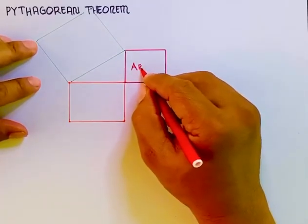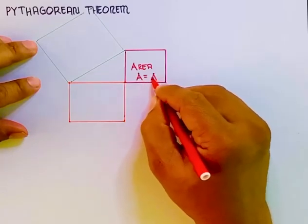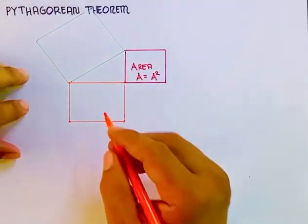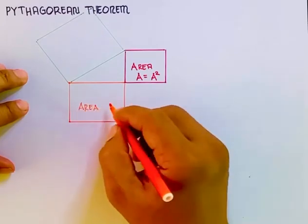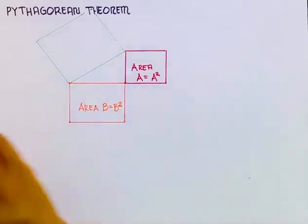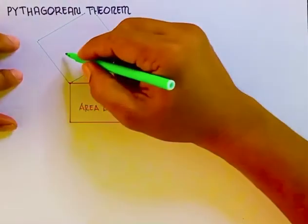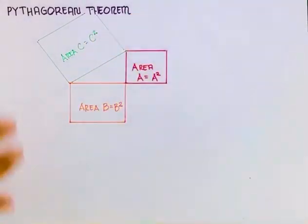So for the small box, that will be called Area A, also as A square. And for the bigger box, that will be called Area B, also known as B square. And for the third box, that is called Area C or C square.